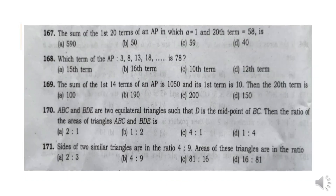Question 167: The sum of the first 20 terms of an AP in which A is equal to 1 and the 28th term is equal to 58 is 590. Option A.